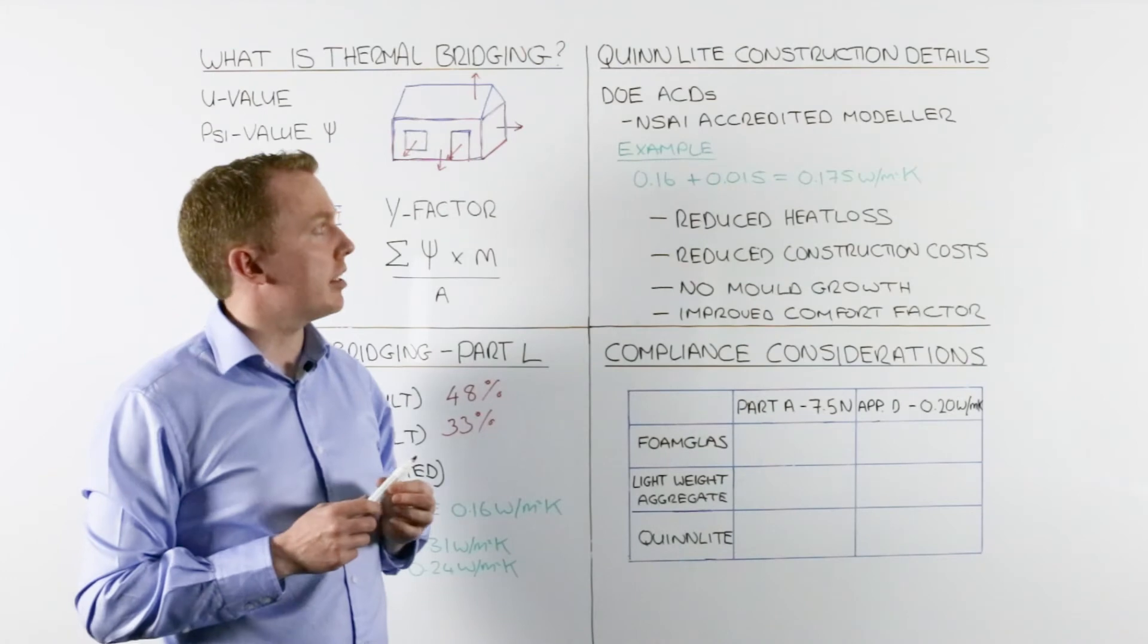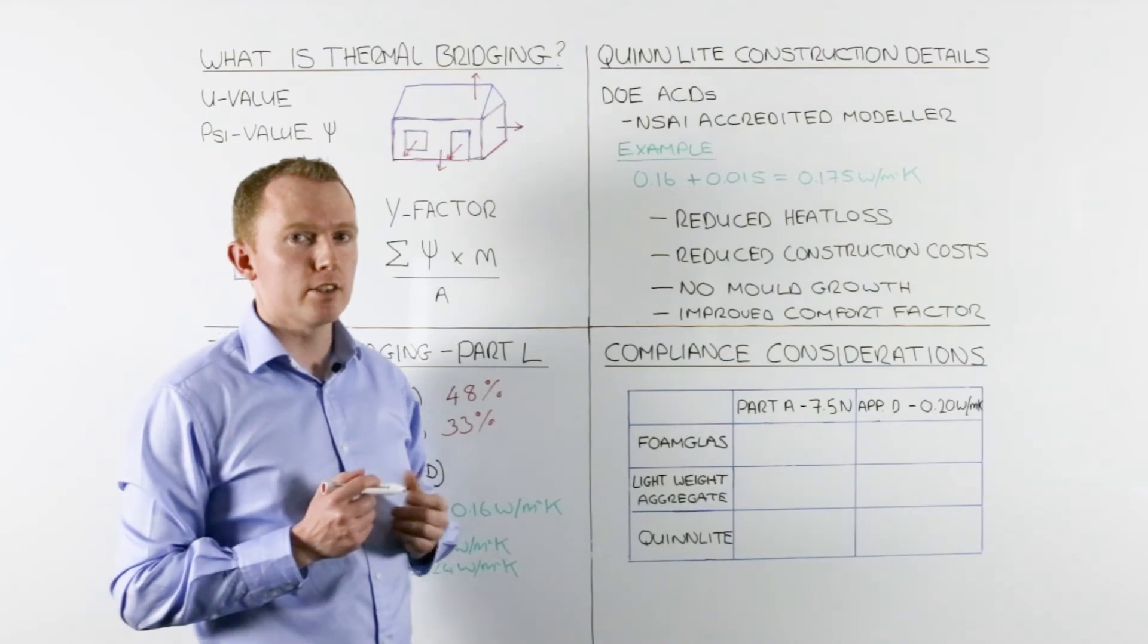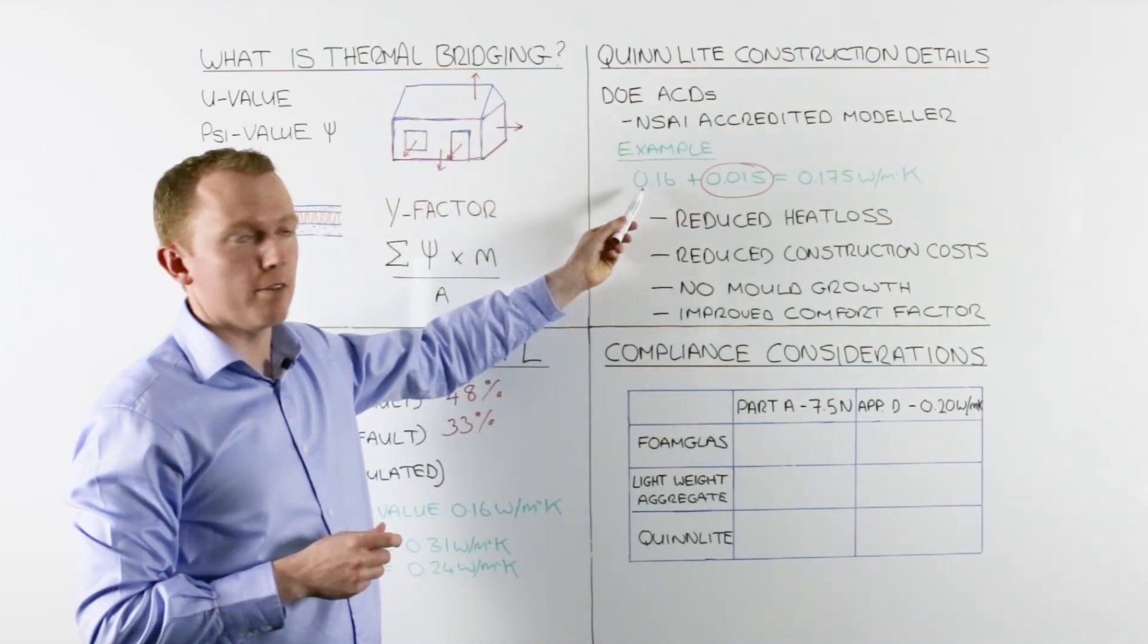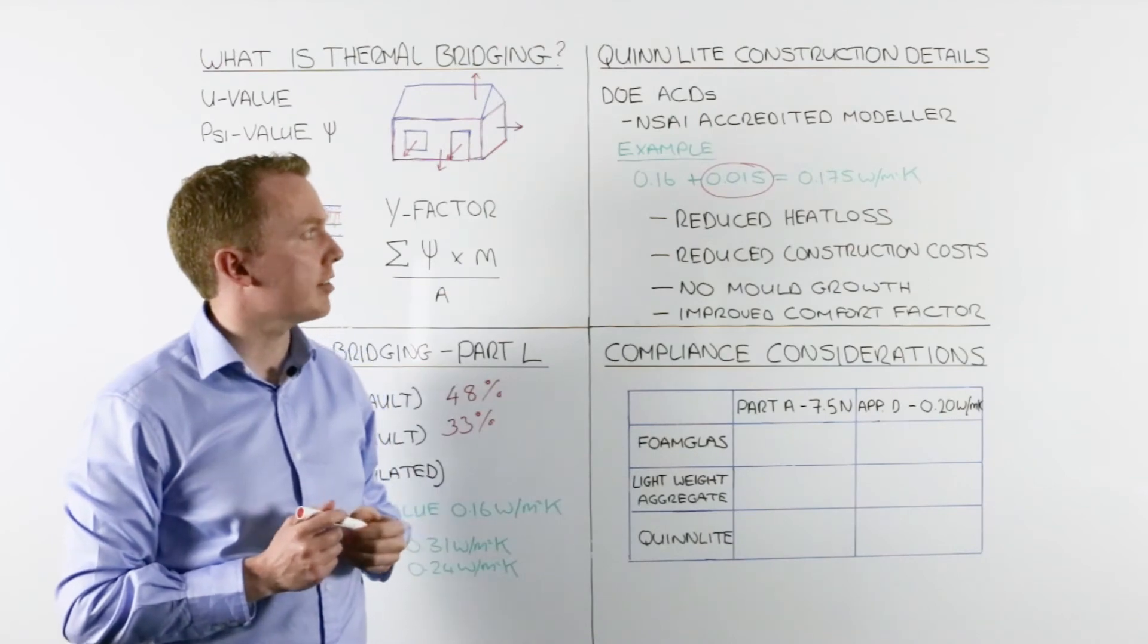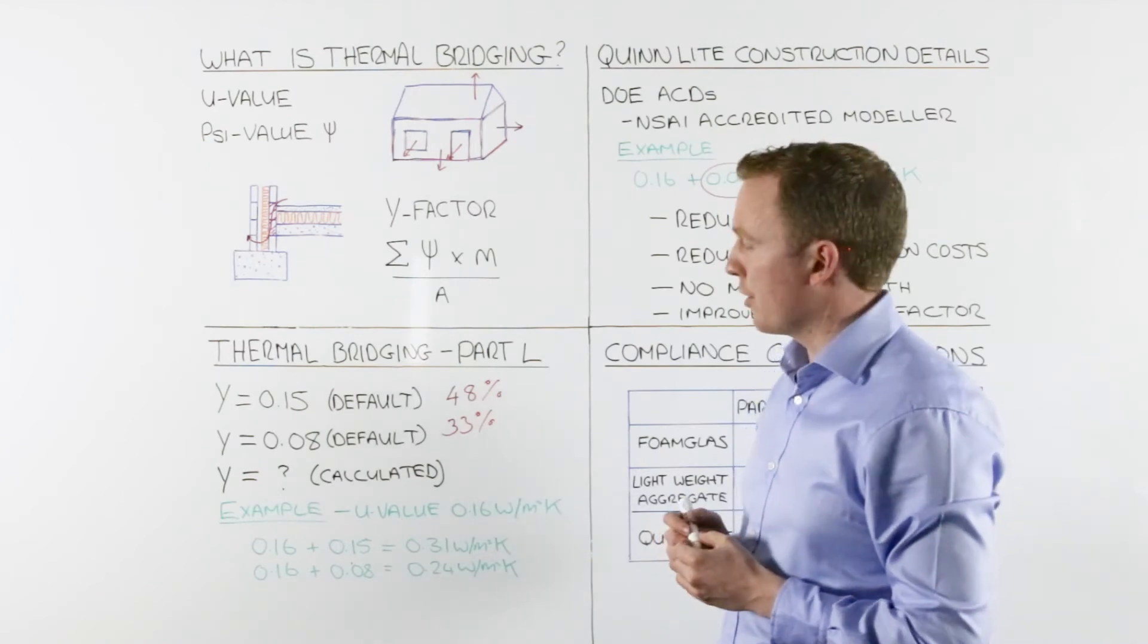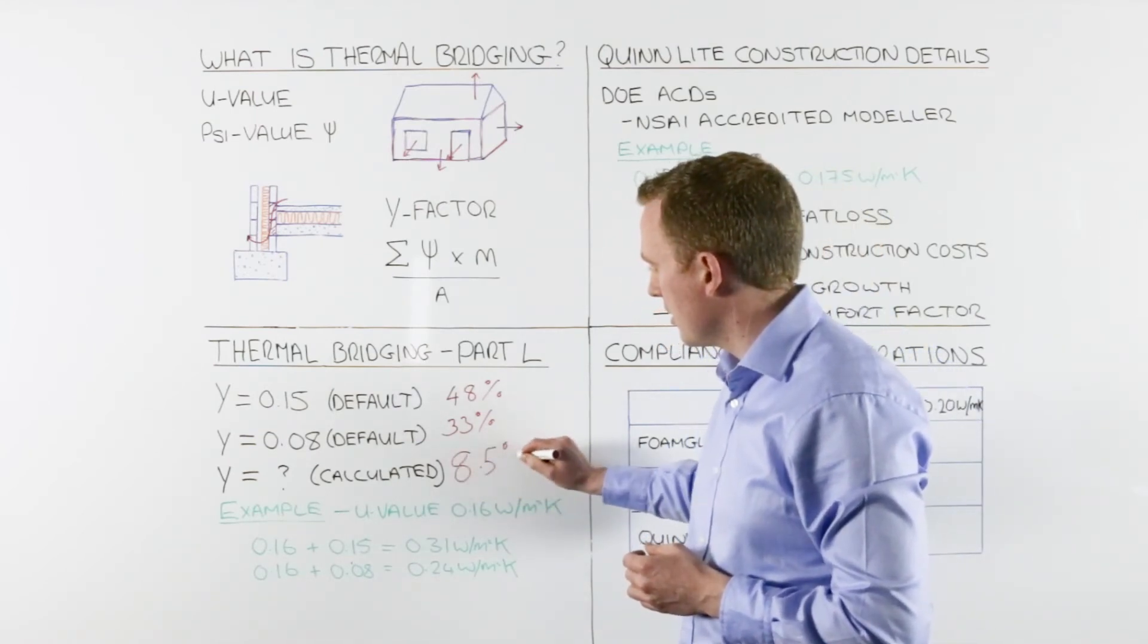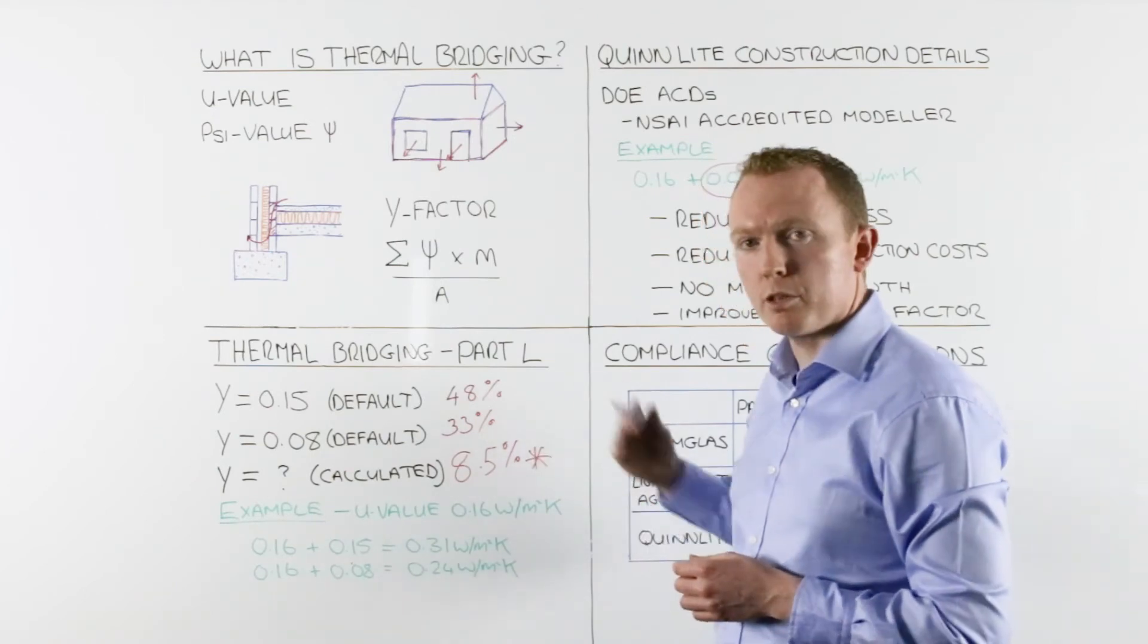So if we look then at our example using our Quinlite construction details, we can calculate Y-factors as low as 0.015. So when we add this to our average U-value, we get a heat loss of 0.175 watts per meter squared kelvin. Looking at that then, comparing it to our default values, the percentage heat loss using our Quinlite construction details is 8.5 percent, which is a significant improvement on the two default values. And this is the method which we should be using.